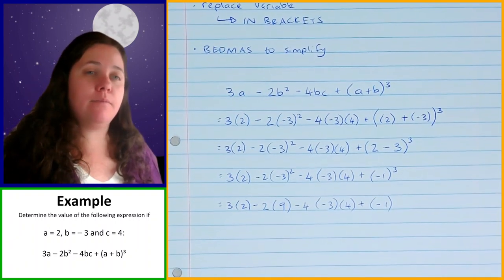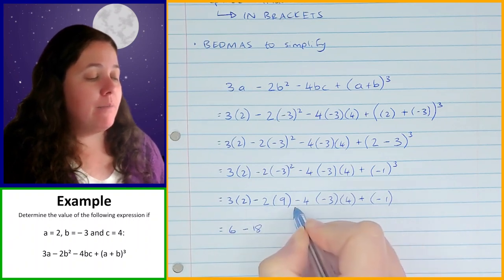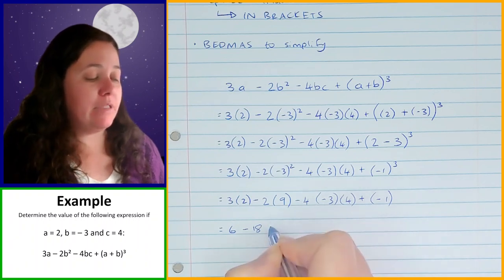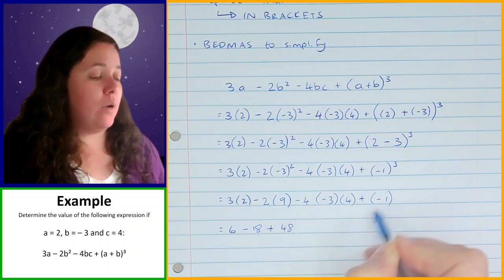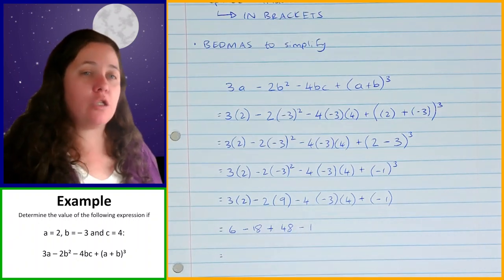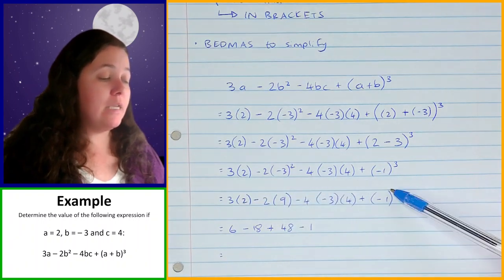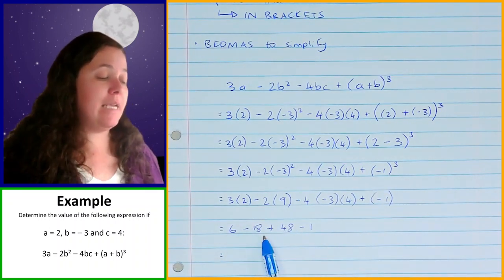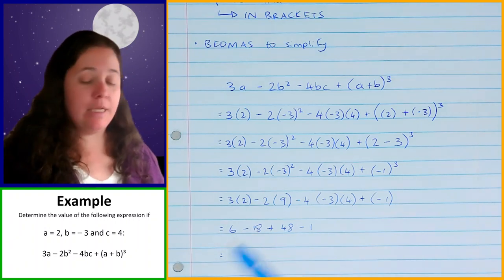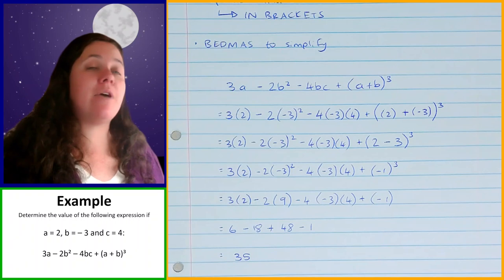Now I'm going to simplify by doing my multiplication. 3 times 2 is 6; minus 2 times 9 is minus 18. Then minus 4 times negative 3 times 4: a negative times a positive gives positive, and 4 times 3 is 12 times 4 is 48, so that's plus 48. Then plus negative 1 is minus 1. Now for addition and subtraction: 6 minus 18 plus 48 minus 1. 48 minus 18 is 30; 6 plus 30 is 36, minus 1 is 35. So for this whole example, the answer is 35.